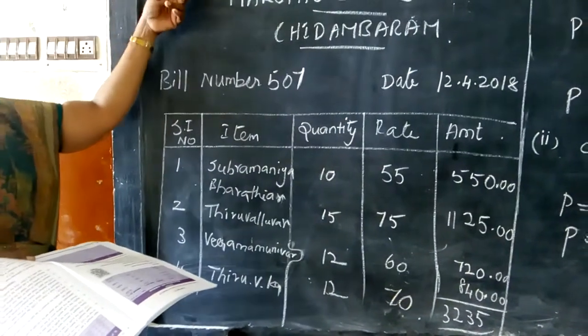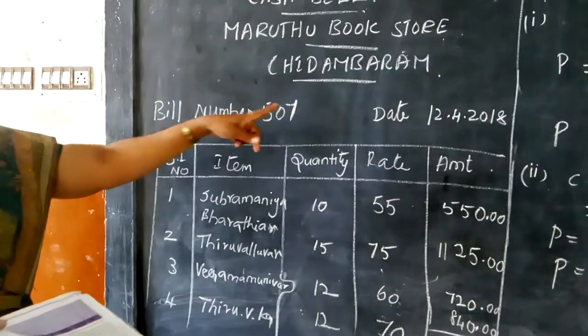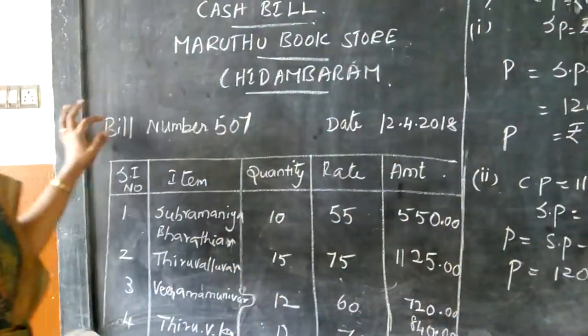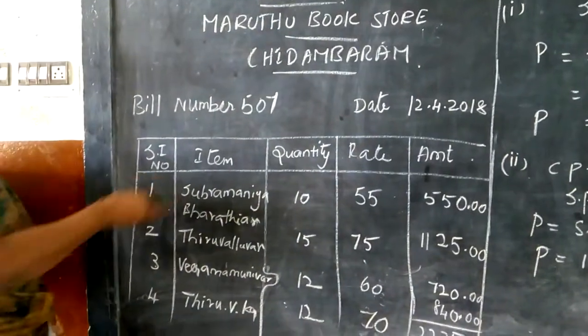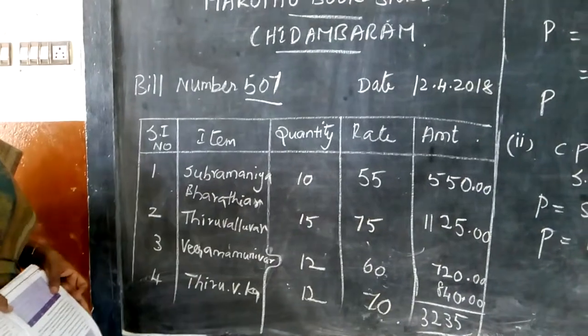So first we should write cash bill. This is a cash bill. And you should write the name of the shop and where it is. And then what is the date. The date is very much important. And then the bill number. Bill number is most important. Why? Because by seeing the bill number we can identify very easily.